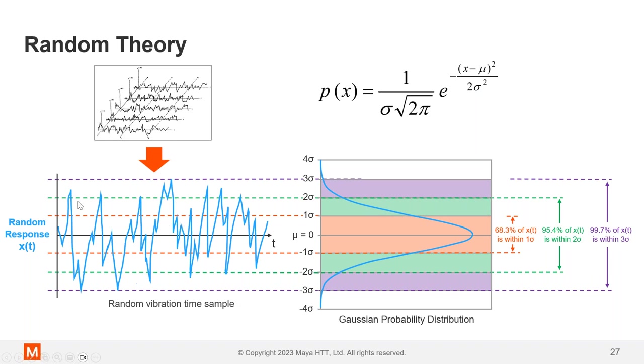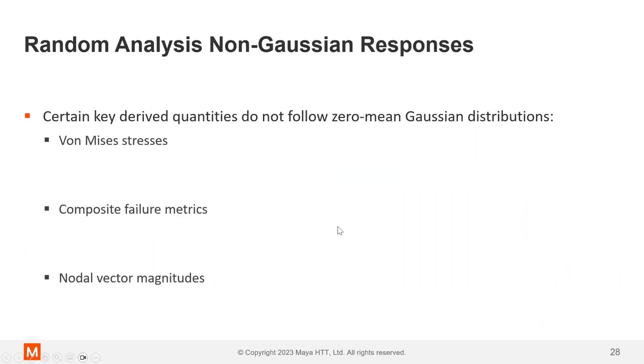You might also have heard this called like a bell curve. And basically, we're just counting this up. We're counting up the amount of times the time history exceeds certain levels. So you'll see a lot of times we're talking about the root mean square RMS. This is the one sigma. So 68% or so of the responses of the time history will be within this range.